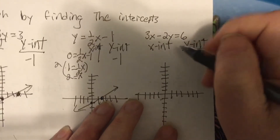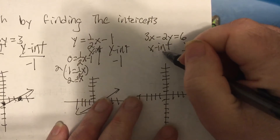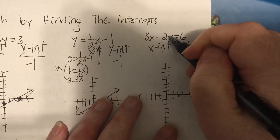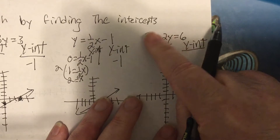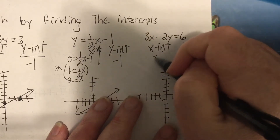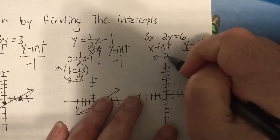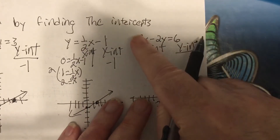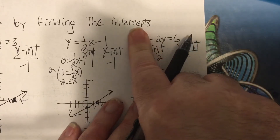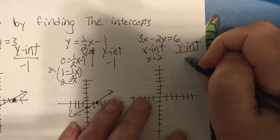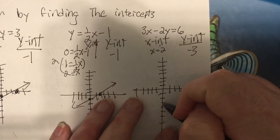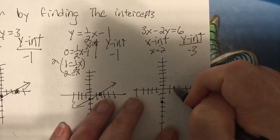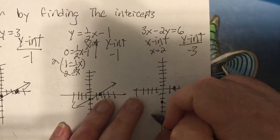The x-intercept: put zero in for y, so three x equals two, divide by three, x equals two-thirds. The y-intercept: put zero in for x, so negative two y equals six, divide by negative two, it's negative three. So x-intercept is two-thirds, y-intercept is negative three.